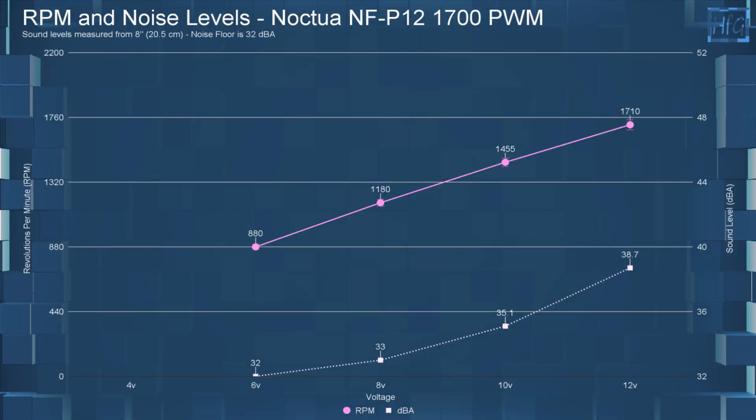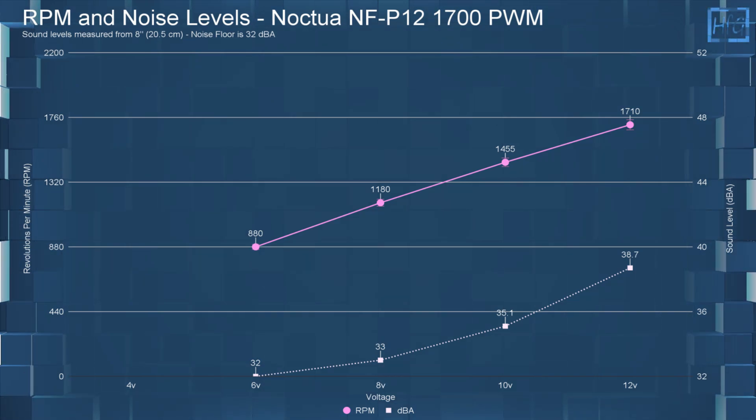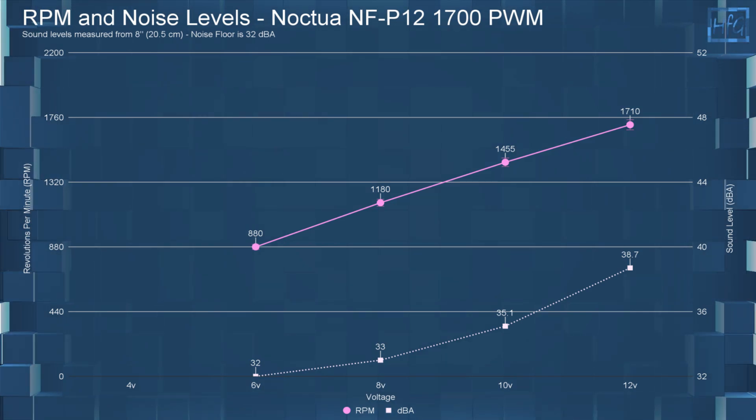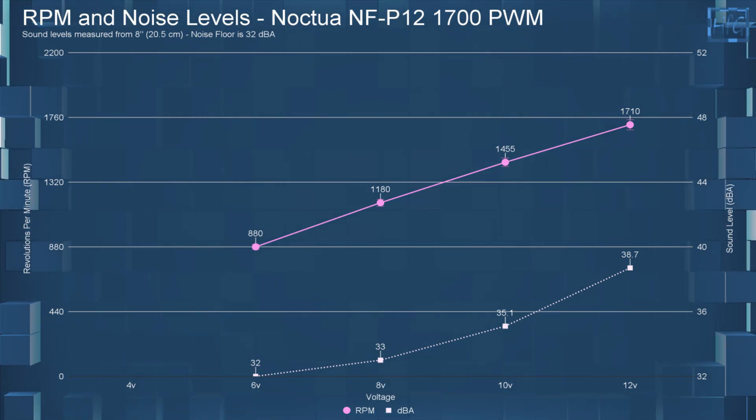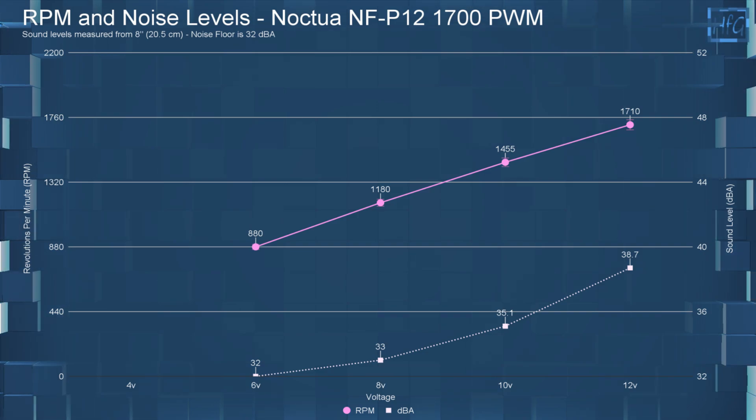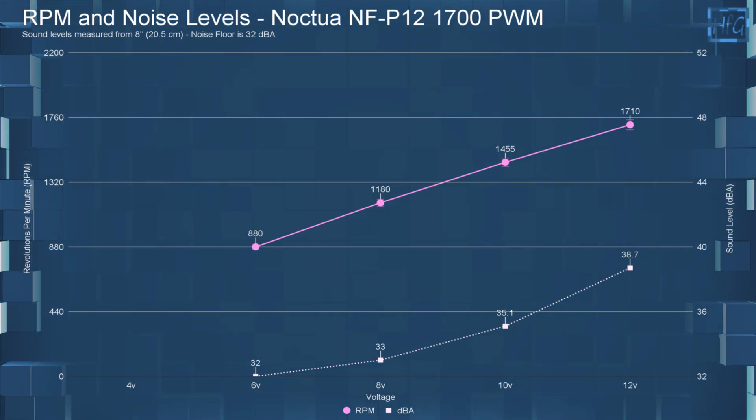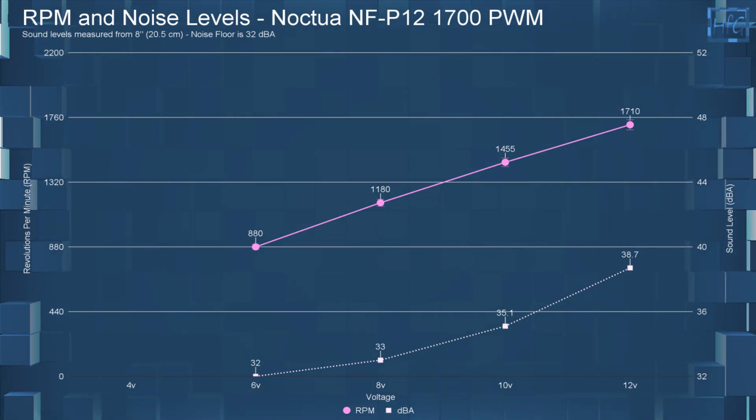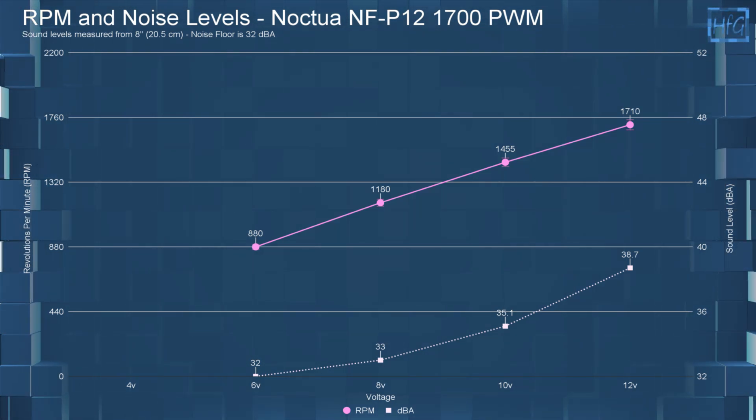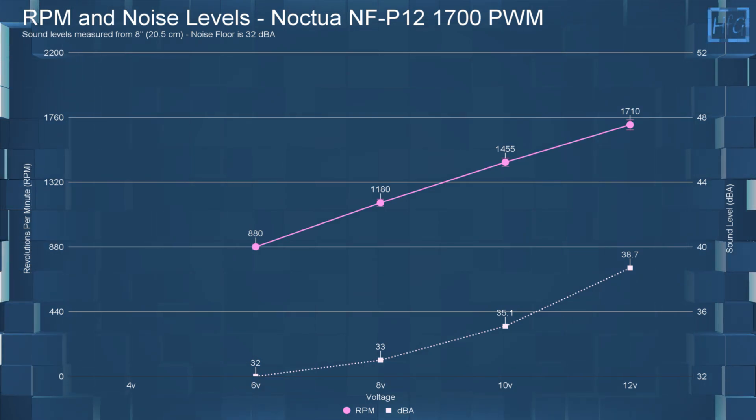Starting with the DBA and RPM testing. At 6 volts, the sound level was 32 DBA and had an RPM of 880. At 8 volts, the DBA only went up to 33 and the RPM was 1180. At 10 volts, the sound level went up to 35.1 DBA and the RPM was 1455. And finally, at 12 volts, the DBA was 38.7 with the RPM being 1710. Now I did take sound recordings at each of these voltages.